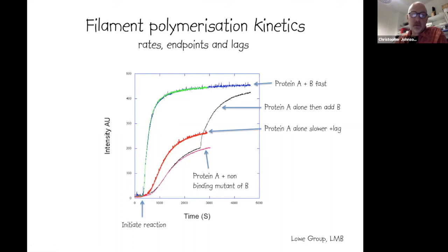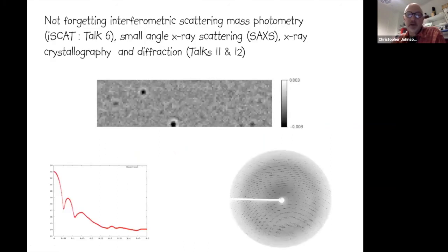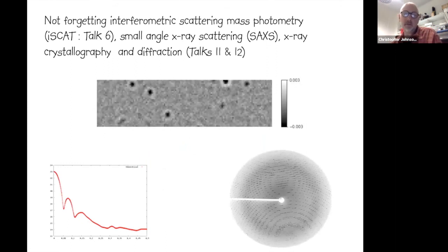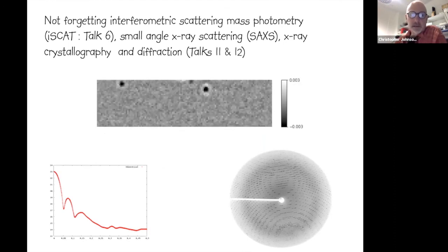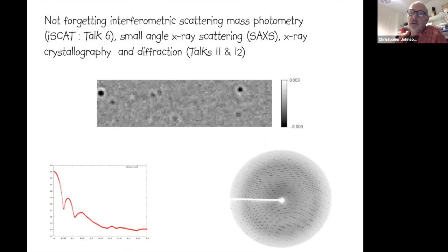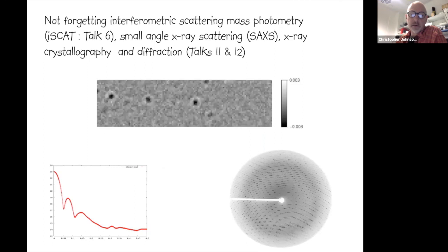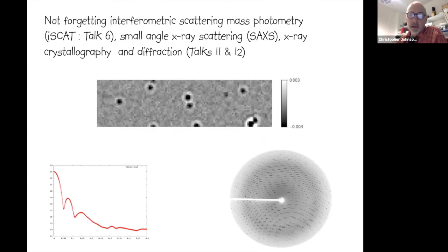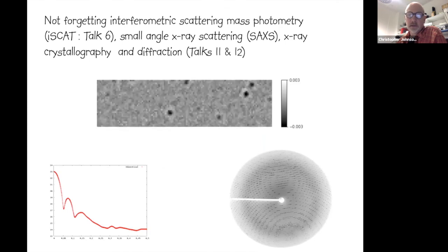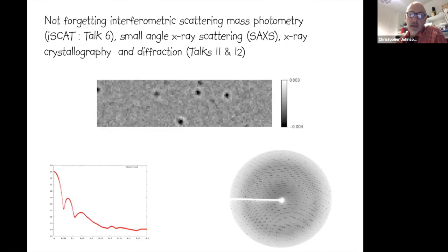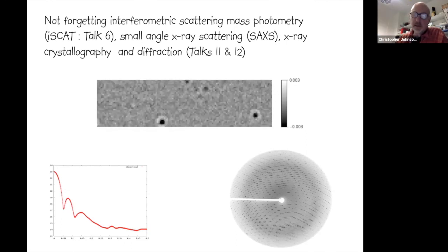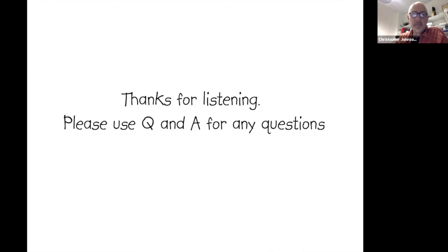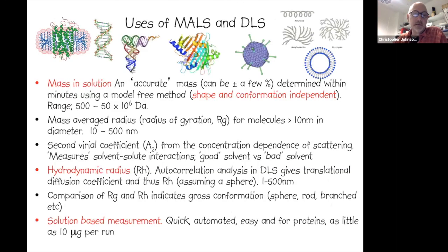That's the end of the talk. Other types of scattering covered in the biophysical techniques lecture series include interferometric scattering or mass photometry (iSCAT), covered in talk six, which is predominantly a single-particle measurement. There is also small-angle X-ray scattering at synchrotron sources, and X-ray crystallography and diffraction, which are also forms of electromagnetic radiation scattering.